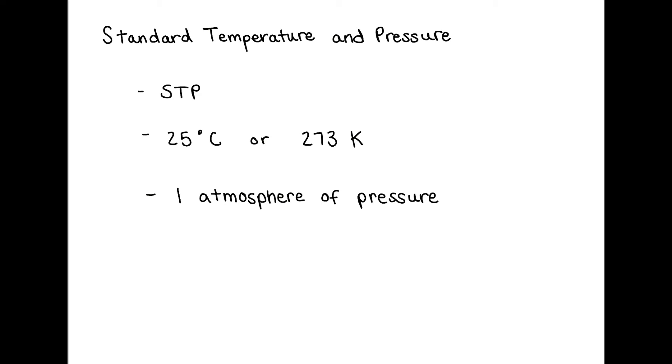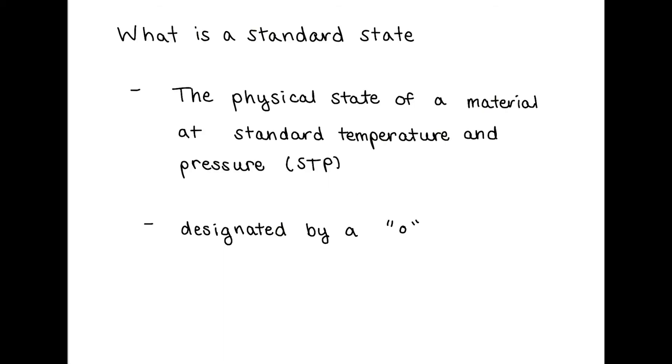Now let's talk about the relationship between standard temperature and pressure and a standard state. The standard state of a material is the physical state of a material at standard temperature and pressure. A standard state is typically described by a small circle or a knot symbol.